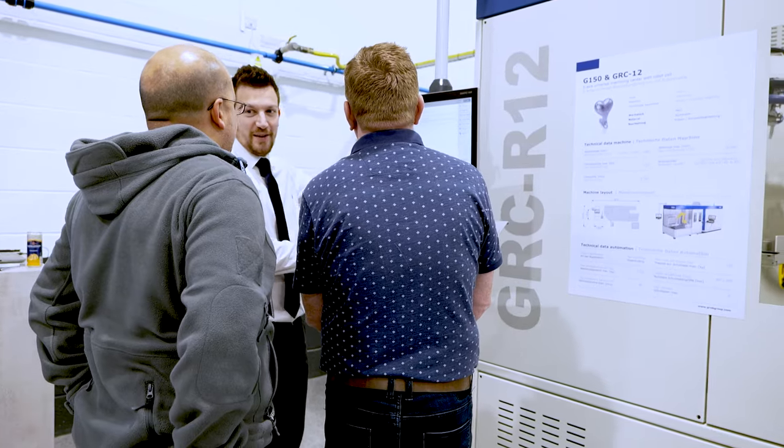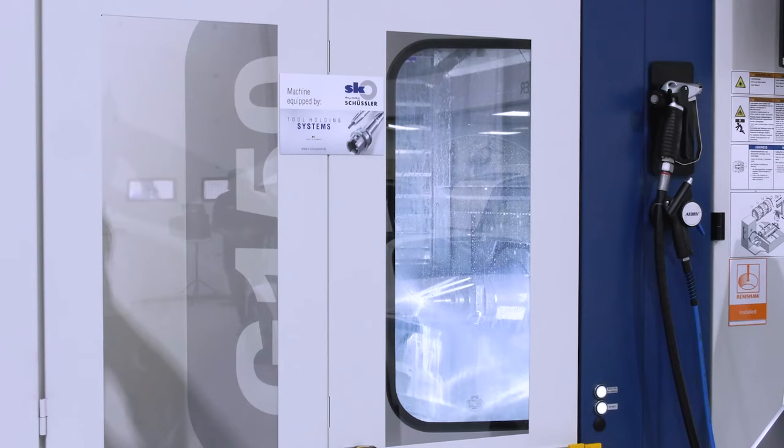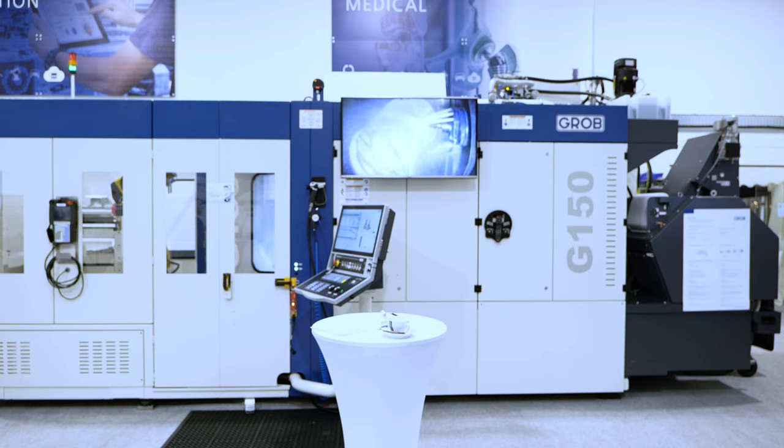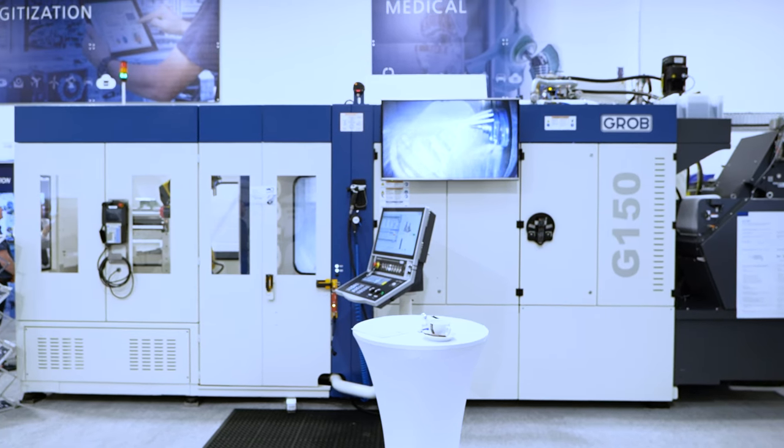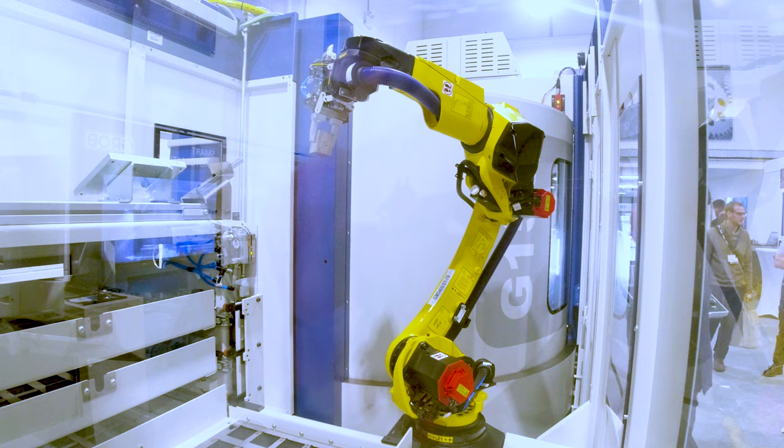So we've got the Grob G150, but you've got automation attached to it, haven't you, Paul? Yeah, this machine, the G150, comes with the new Grob GRC R12 robot cell. This setup is a fully lighted out cell. It's been really making waves, particularly in the medical industry, but it's applicable to any small billet part that anybody would desire to make.